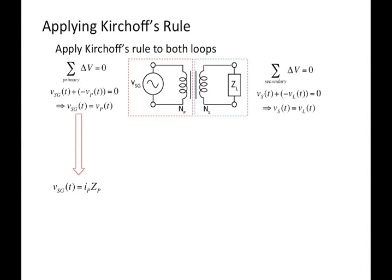But what is the impedance of the primary? That depends on the ratio of the turns and on what the load is on the other side. Looking at the secondary coil equation and applying Ohm's Law, we find that the impedance of the secondary is equal to the impedance of the load.